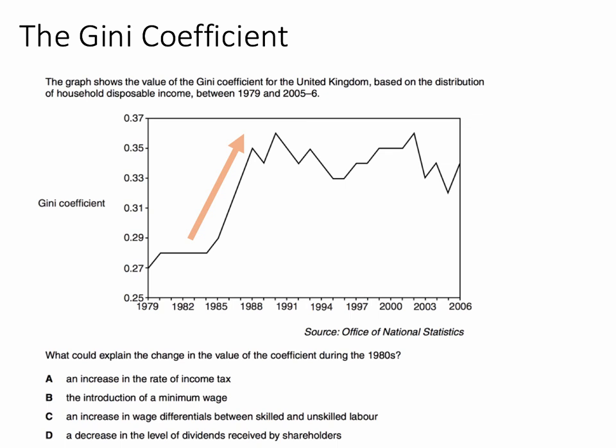Option C looks plausible — an increase in wage differentials, the pay gap in other words, between skilled and unskilled labour. A decrease in the level of dividends received by shareholders would not be right, since if shareholders receive dividends that adds to their disposable income and worsens inequality — but this option says a decrease. So the correct answer is C: an increase in the gap between highly skilled, well-paid jobs and relatively unskilled jobs with lower pay in the labour market.